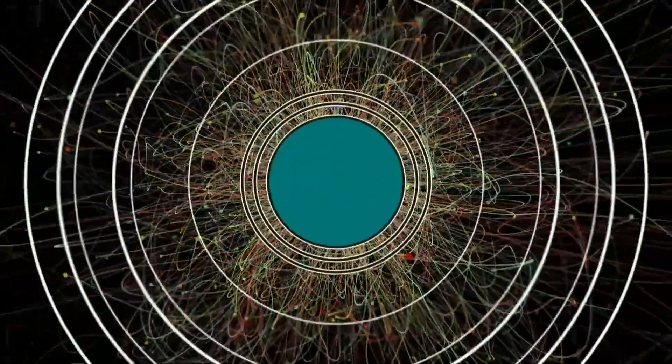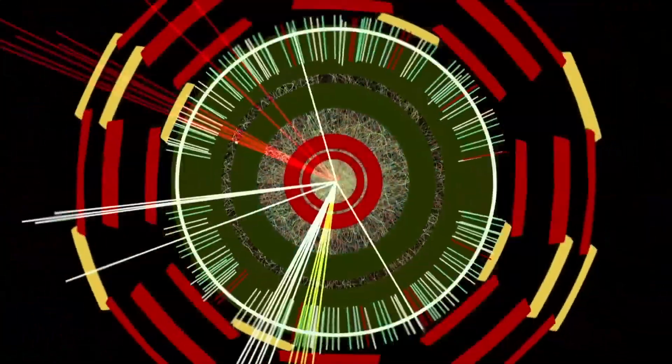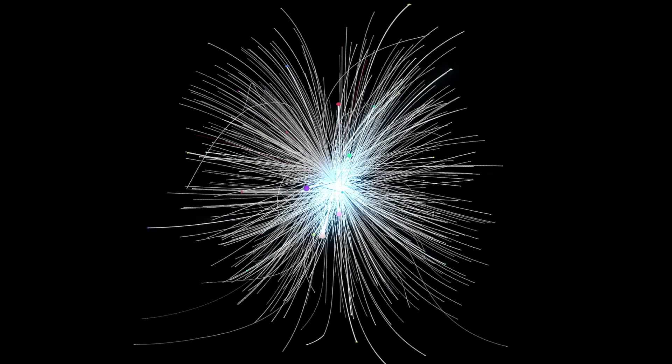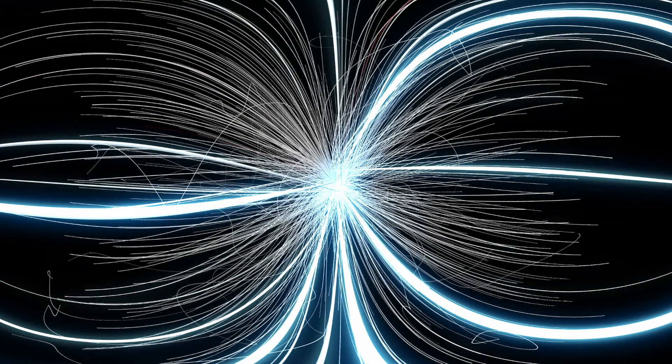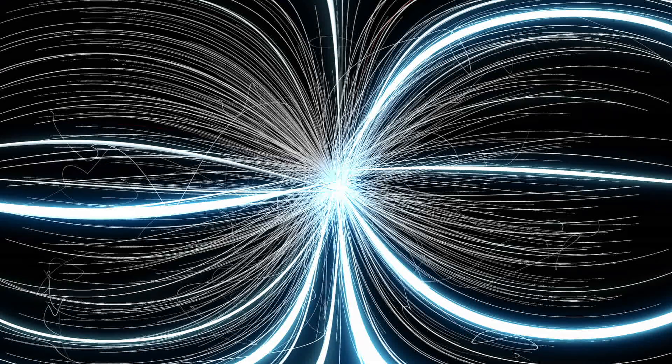Particle accelerators like the ones created by CERN send subatomic particles around and around until they reach speeds approaching the speed of light before they are finally directed toward each other and forced to collide in a powerful crash. These collisions cause the particles being accelerated to smash open in a tremendous release of energy, sending fundamental particles flying as they decay into their constituents.